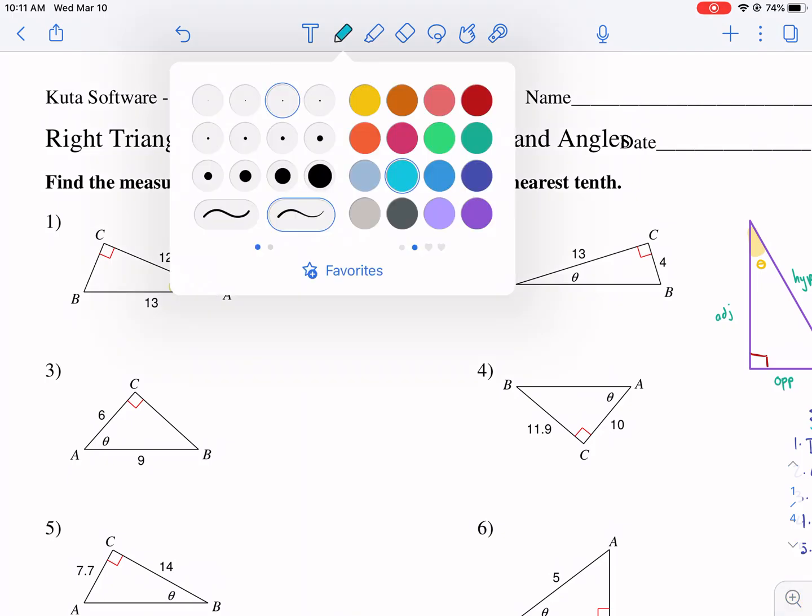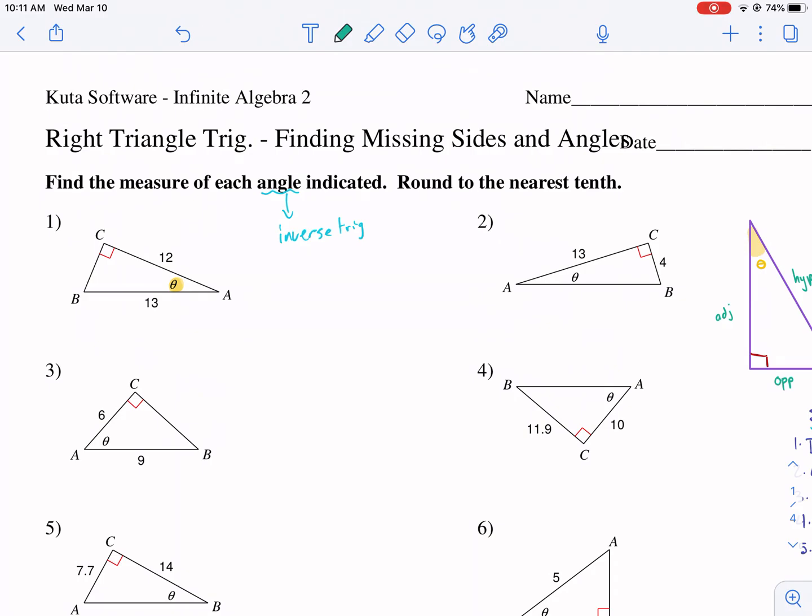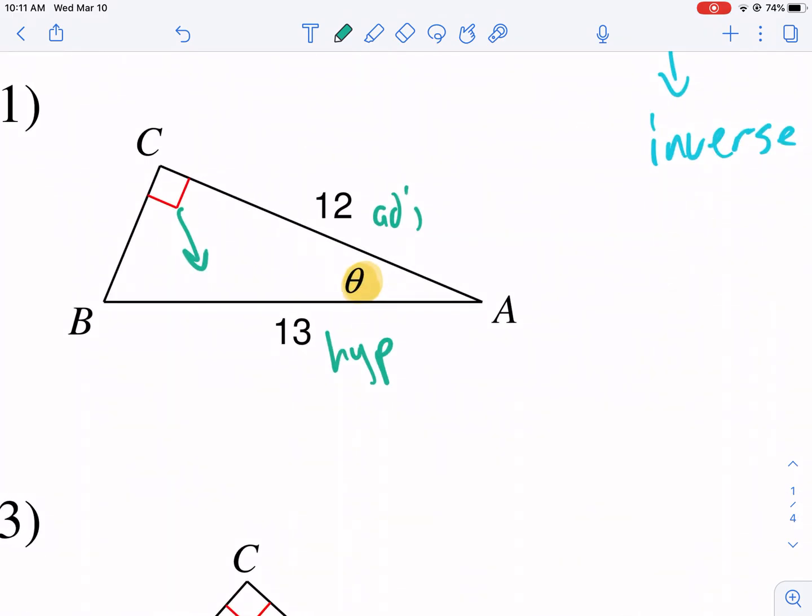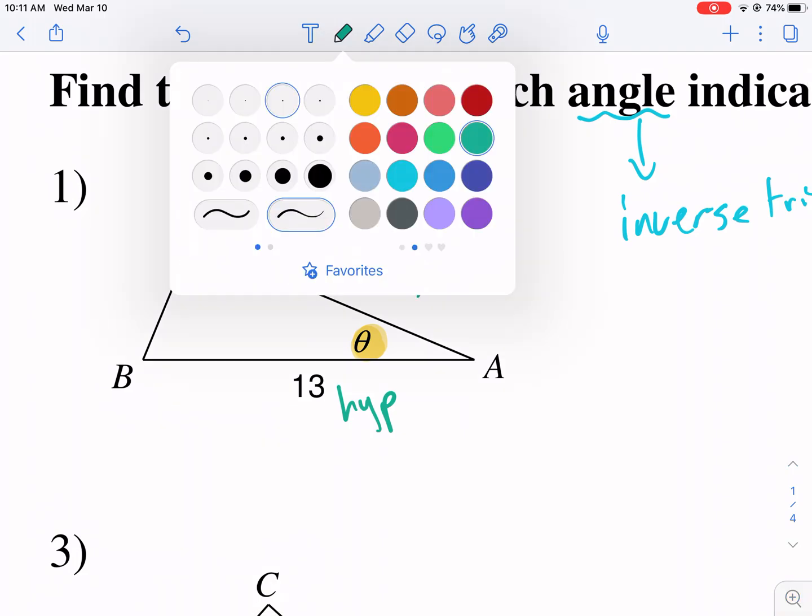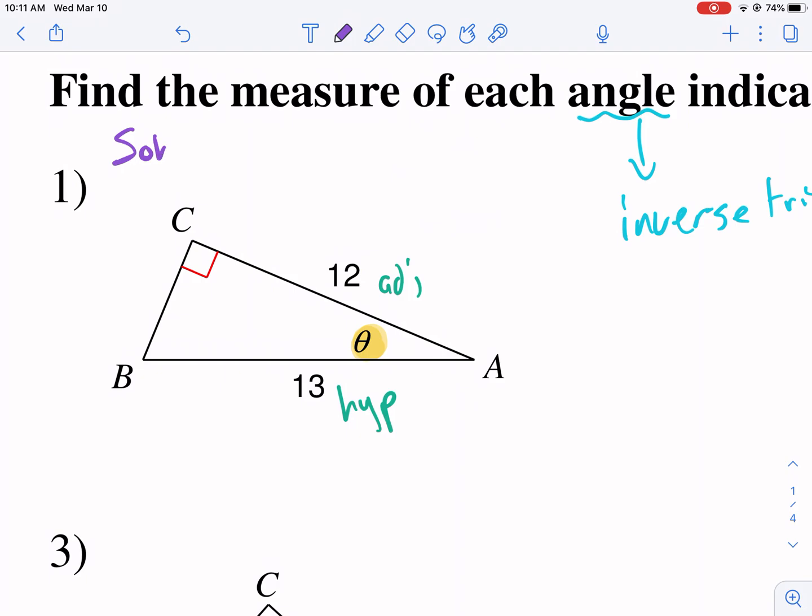Let's follow our step process. Here's our reference angle. Let's label the sides next. I don't have an opposite side, so I don't really need to label the opposite side. I just need to label the adjacent side, which is given, and the hypotenuse is opposite this 90 degrees. Next, we need to figure out which trig identity uses adjacent hypotenuse.